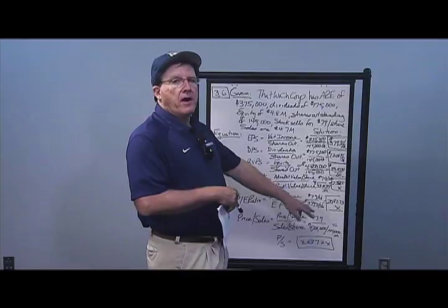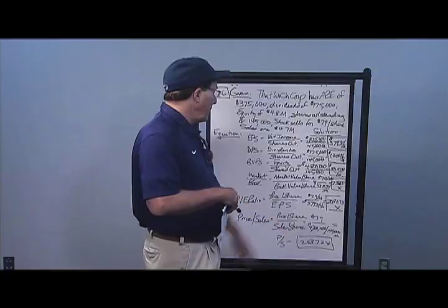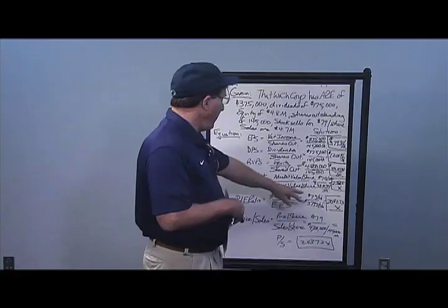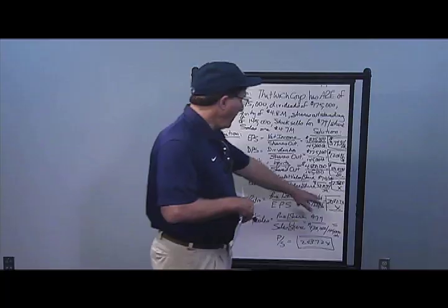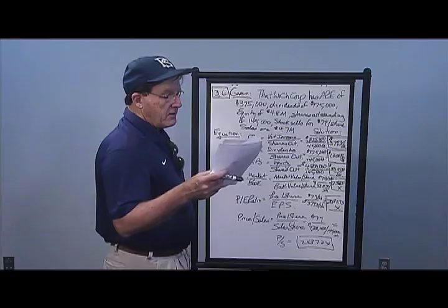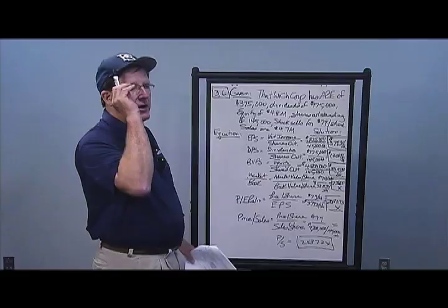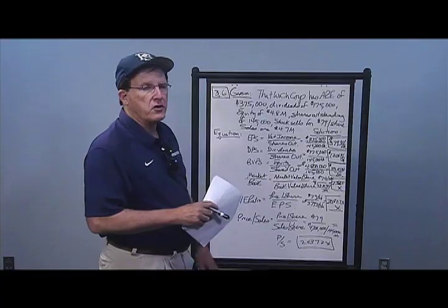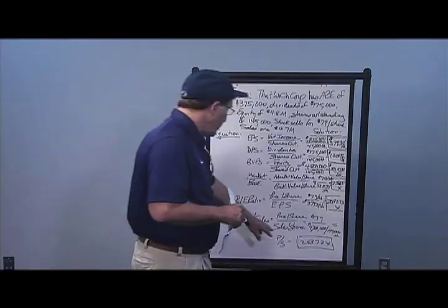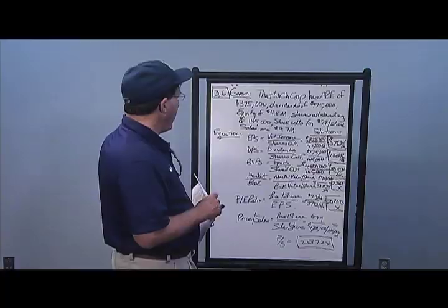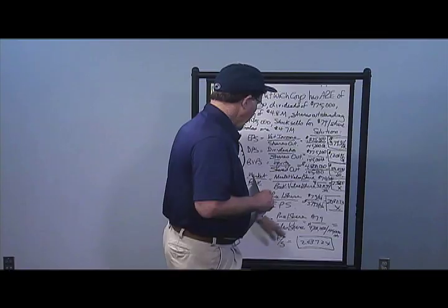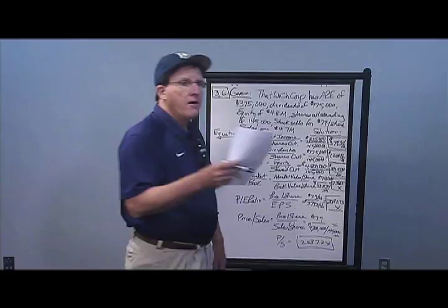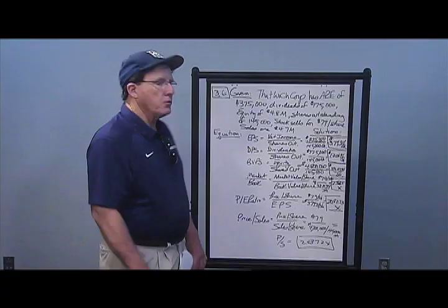The price-to-earnings ratio is price per share divided by earnings per share: $79 divided by $3.7931 gives a P/E of 20.8273 times, which can be compared to other companies and industry P/E ratios. The price-to-sales ratio is price per share divided by sales per share. Sales per share must be calculated: $4.7 million divided by 145,000 shares. Then $79 divided by that gives a price-to-sales ratio of 2.4372 times. Those are the solutions to Problem 6.